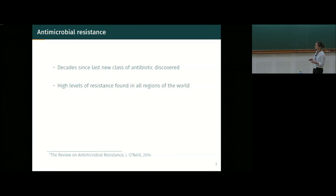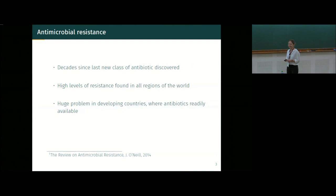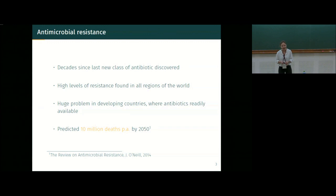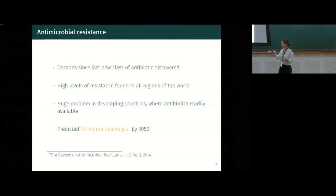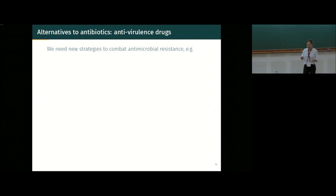Now we are seeing high levels of resistance found throughout the world. It's a huge problem in developing countries and low-to-middle-income countries where it's much easier to get antibiotics over the counter. A UK government-commissioned study suggests that by 2050, if we don't tackle antimicrobial resistance, there will be a predicted 10 million deaths annually worldwide — including knock-on effects onto chemotherapy patients and others who need antibiotics to prevent infection.